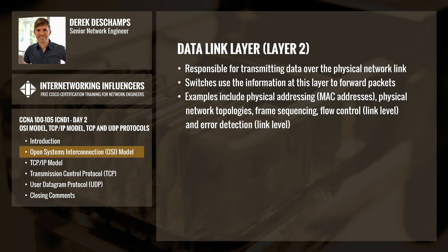The data link layer, or layer 2, is responsible for transmitting data over the physical network link. Switches use the information at this layer to forward packets. Examples of layer 2 implementations include physical addressing such as MAC addresses, physical network topologies, frame sequencing, as well as link-level flow control and error detection.